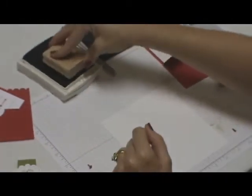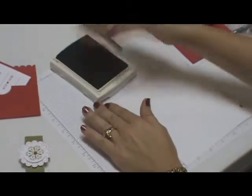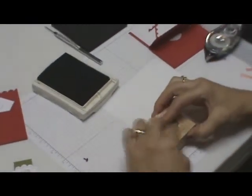Then I'm going to take a piece of whisper white. In the same set as our little tag we made, Sweet Season, I'm going to stamp this one in old olive.